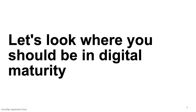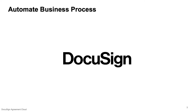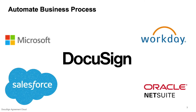For today, I want you to really think about where you are in your digital maturity, but also show you where you really should be with a quick demonstration. I'll be playing the part of a digitally mature DocuSign customer who utilizes some of the products from the DocuSign Agreement Cloud. This will hopefully give you a better understanding of how you can automate business processes across your entire organization with different people and different systems that are typically involved.